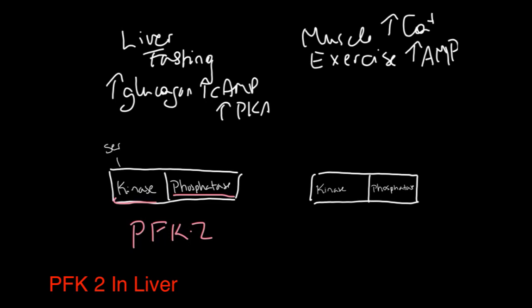During fasting, you have an increase of glucagon, an increase of cyclic AMP, and an increase of PKA. PKA will phosphorylate the serine residue of the kinase domain. When it does that, it will inhibit the kinase domain. So during fasting, it's going to act as a phosphatase.